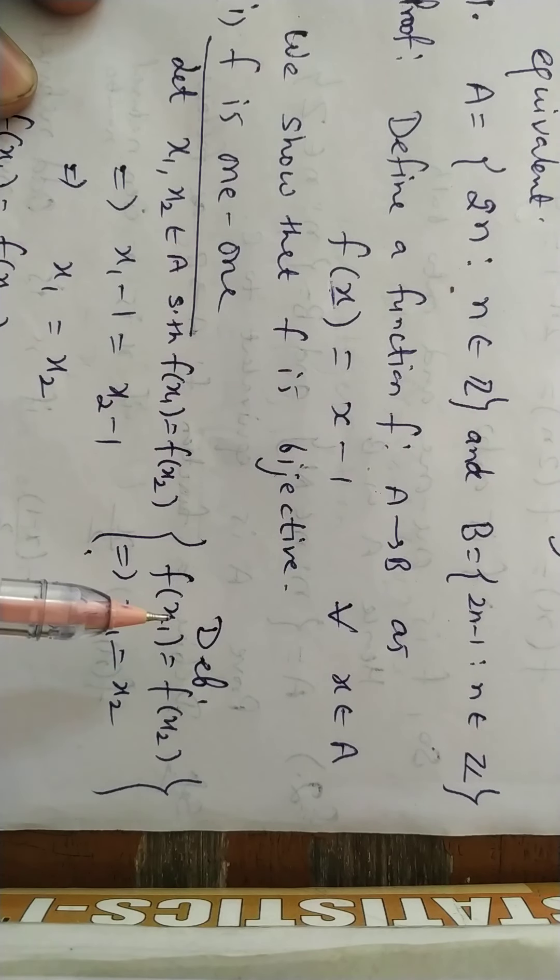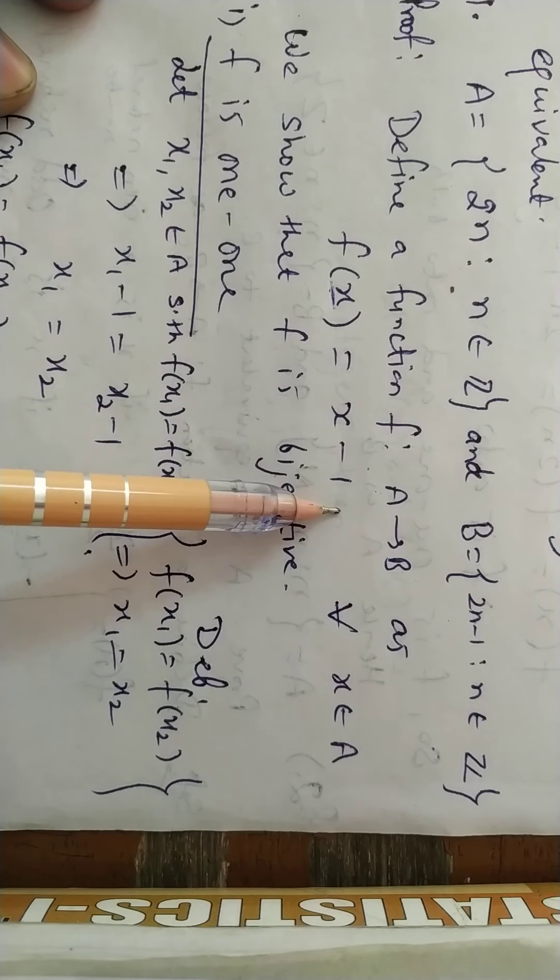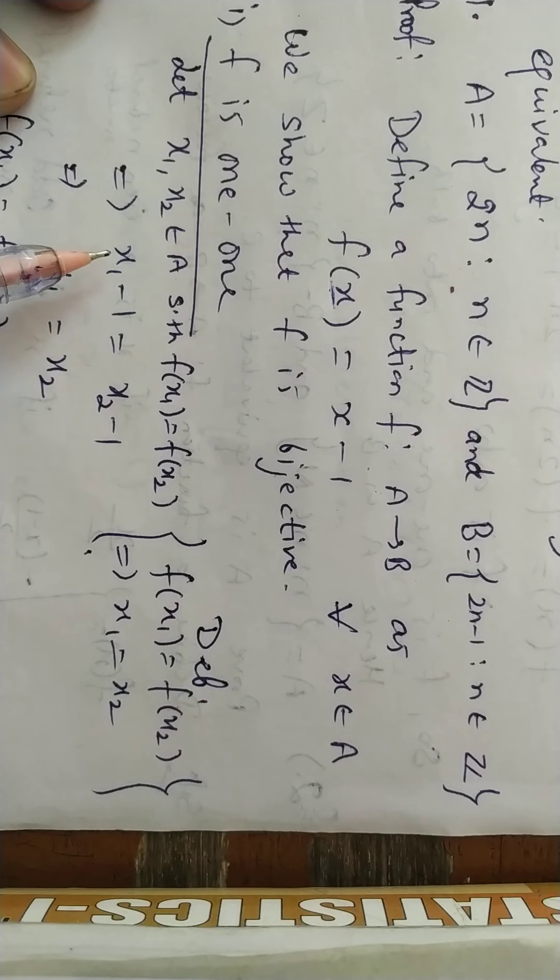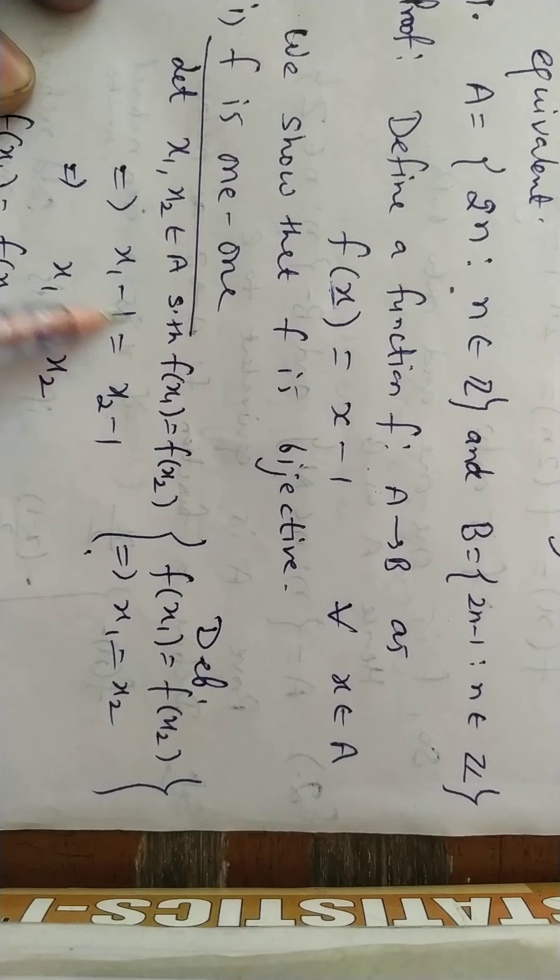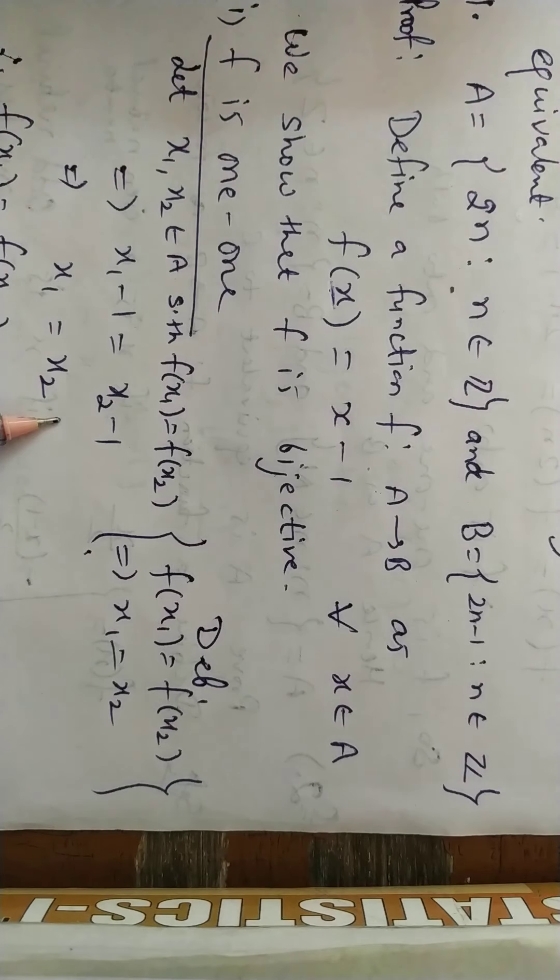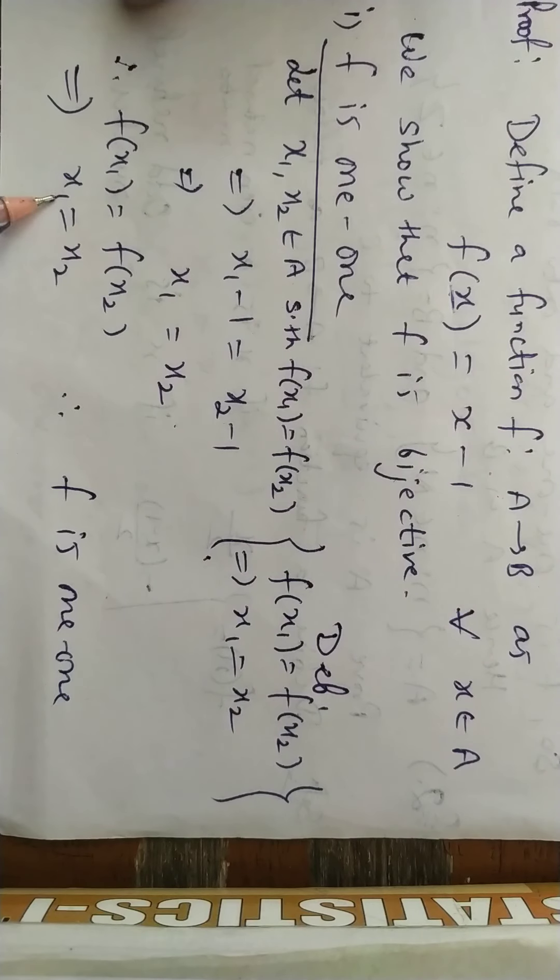The definition of 1-1 is: if f(x1) = f(x2), then x1 = x2. That is, if their images are equal, then their pre-images are also equal. So let us start. Let x1, x2 belong to A such that f(x1) = f(x2). Now f(x) is given as x - 1, so f(x1) becomes x1 - 1, and f(x2) becomes x2 - 1. Minus 1 cancels out, giving x1 = x2. Therefore, we started from f(x1) = f(x2) and arrived at x1 = x2. Therefore, my function is 1-1.